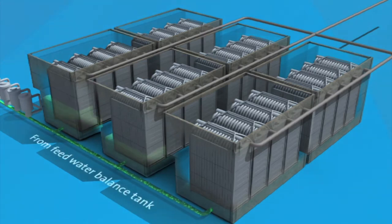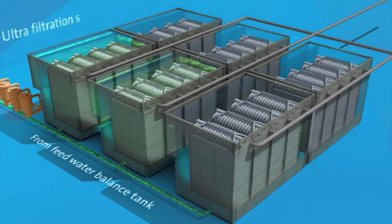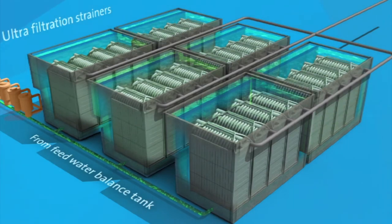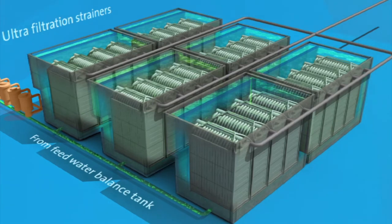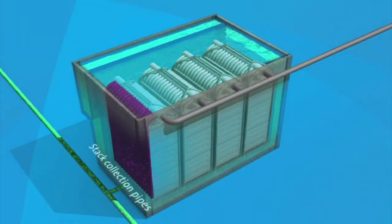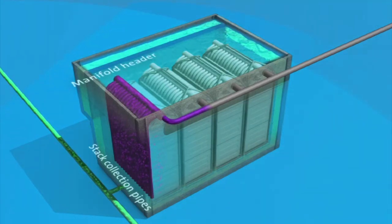Tertiary treated wastewater from the feed water balance tank is pumped to the ultrafiltration strainers. The ultrafiltration strainers remove solids such as weeds and plastics from the wastewater before it enters the ultrafiltration system. Stack collection pipes carry the filtered water or filtrate to a single manifold header on the top of each cassette. Feed water is continually pumped to maintain a constant level in the cells.